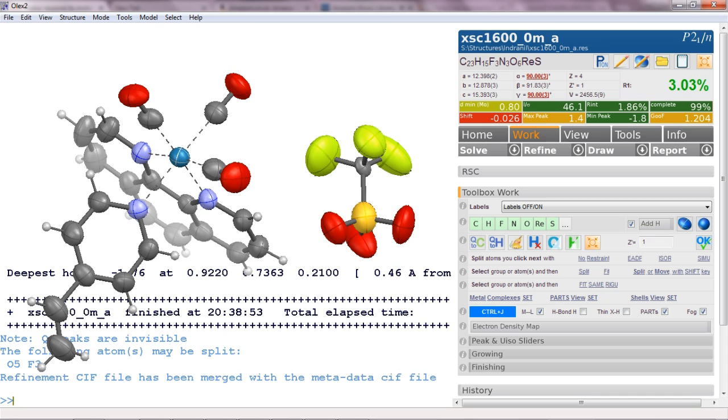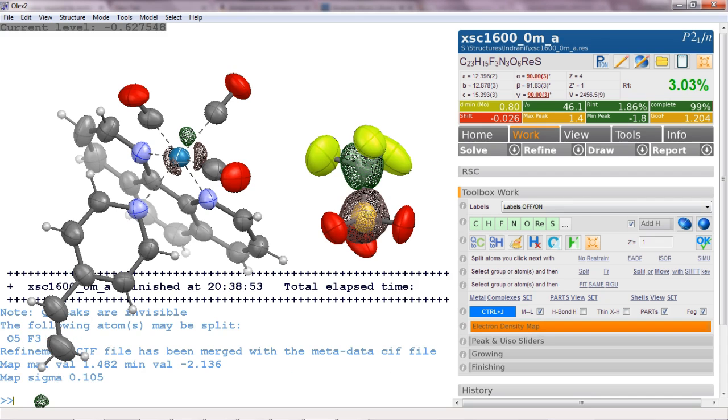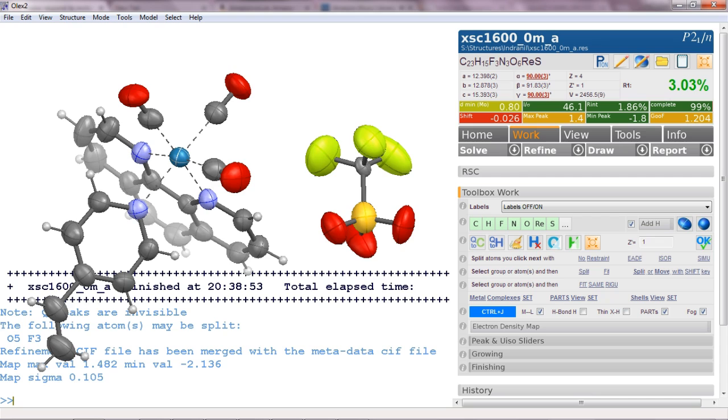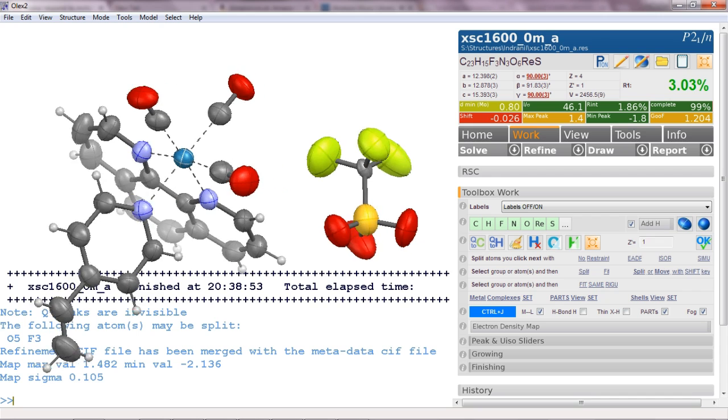And if you look at the electron density map we can clearly see we assigned too much electron density on the sulfur and not enough on that carbon. So what's happening here is this is a head over heel disorder of the triflate and that's quite a common occurrence.